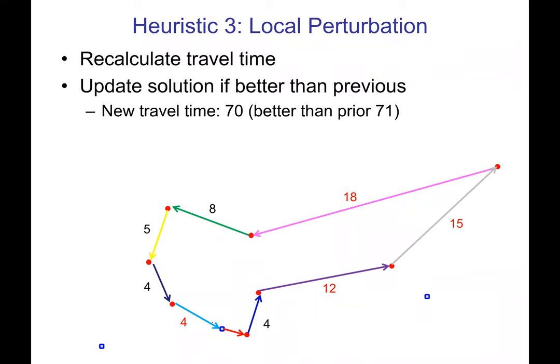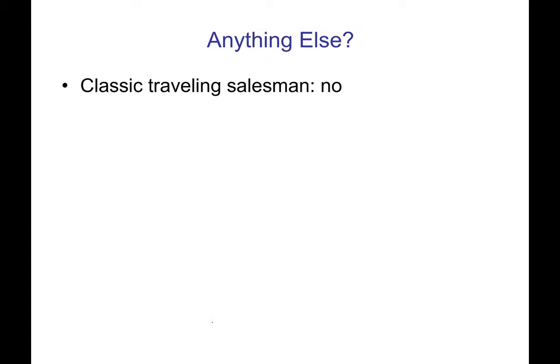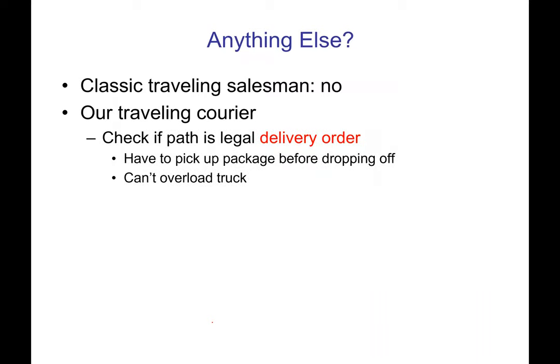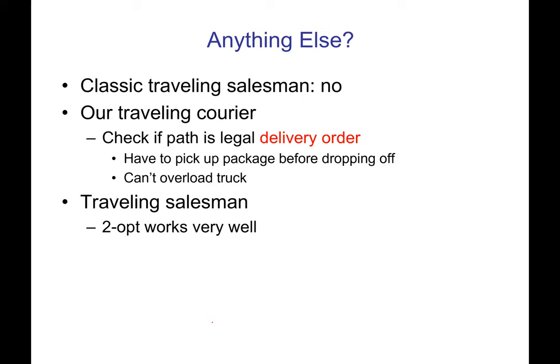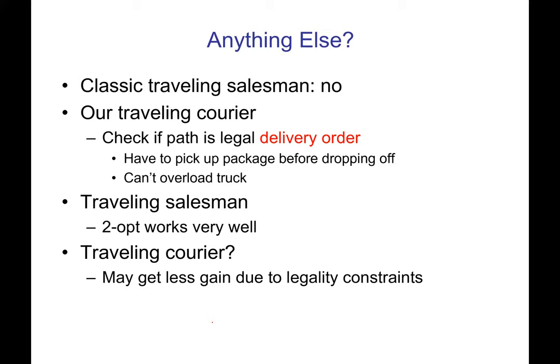I just showed you how to do two-opt at a high level — you delete a couple of edges, then reconnect things. In classic traveling salesman you're done, but for us we also have to check if the path is still legal: did we pick up a package before dropping it off, and did we not overload the truck? If the perturbation made things illegal, the easiest thing to do is just reject it immediately. In our problem, the extra legality constraints may mean you get less gain from two-opt, since a lot of proposed changes might be illegal.